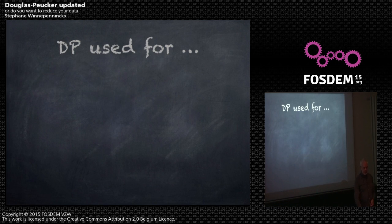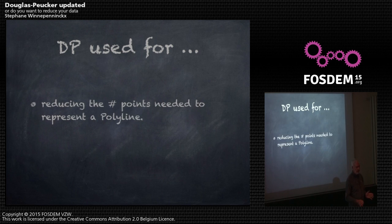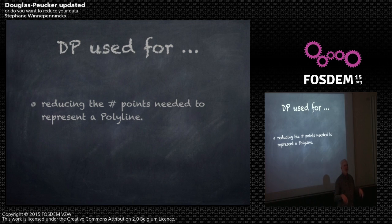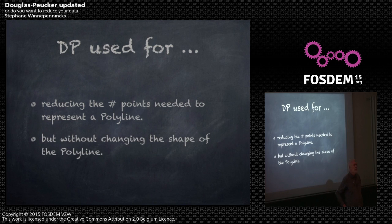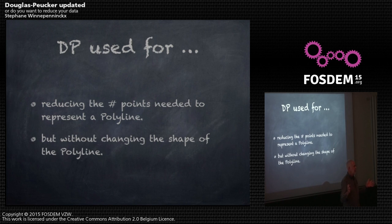Douglas-Peucker was used for reducing the number of points in a polyline. When I talk about a polyline, you imagine a line that seems to be curvy but in fact it's small segments of straight lines connected by points. It's easy to reduce the number of points — you throw one out of two or nine out of ten — but the shape of your polyline is destroyed.